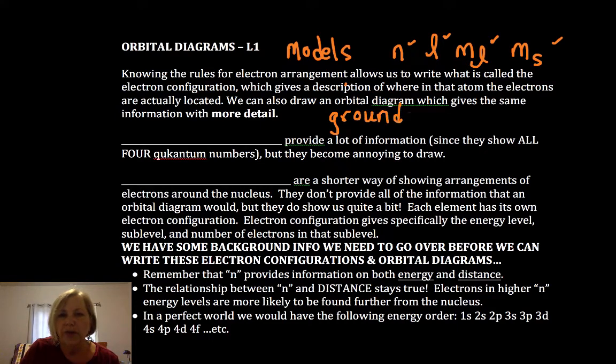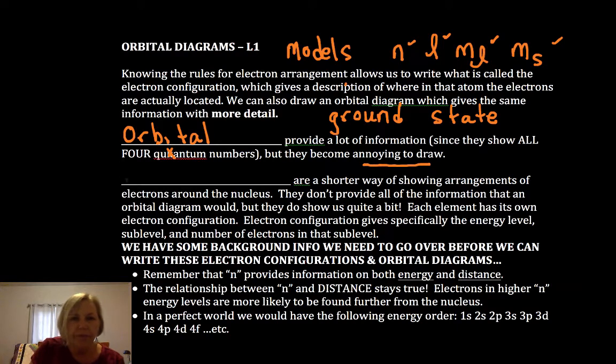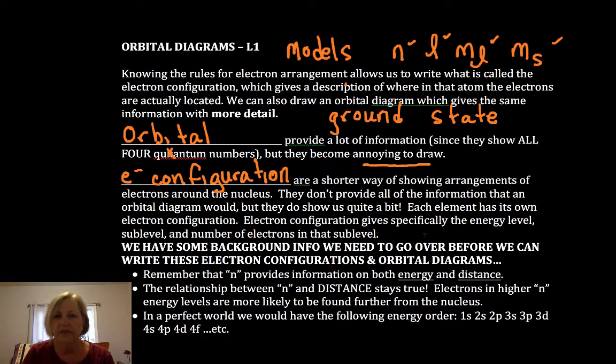So for now we're going to start with the ground state, that lowest state available. Now an orbital diagram shows as much detail as possible, all four quantum numbers, but they can be a little annoying to draw. So the next one that's a little simpler is an electron configuration. So we're going to be learning these over a series of videos. Now each element is going to have its own orbital diagram, its own electron configuration, and that's going to provide us with the information that we need to then begin to do properties and function because structure determines function.